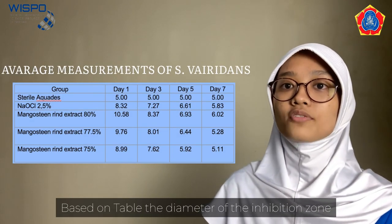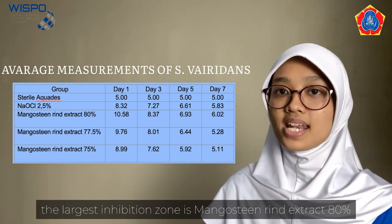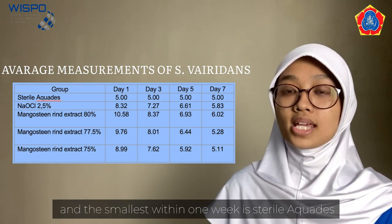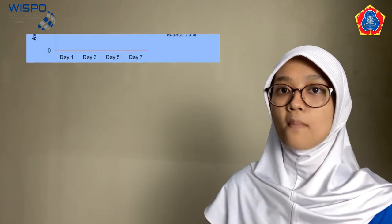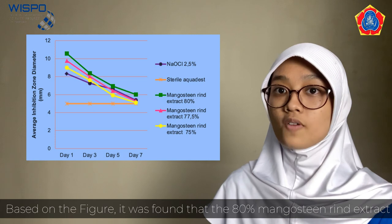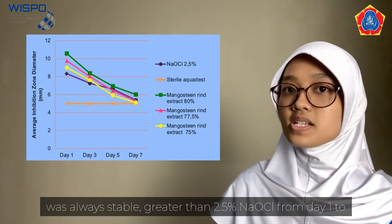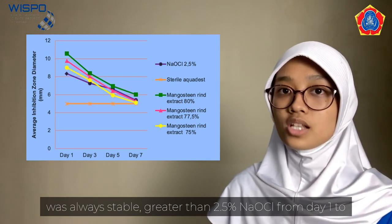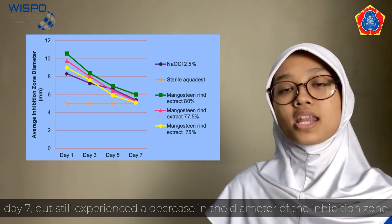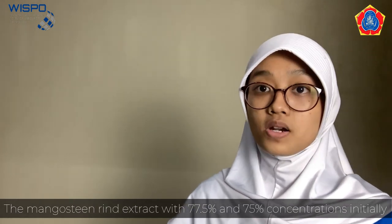Based on the table, the largest diameter of the inhibition zone is Mamusin Rai extract 80%, and the smallest within one week is sterile aquades. Based on the figure, it was found that the 80% Mamusin Rai extract was always stable, with an inhibition zone greater than 2.5% NaOCl from day one to day seven, but still experienced a decrease in the diameter of the inhibition zone.